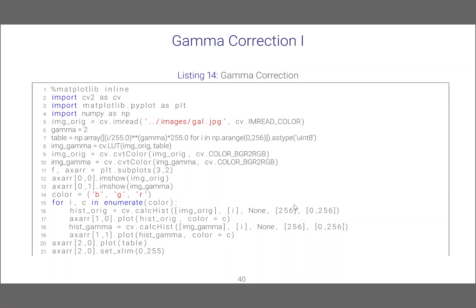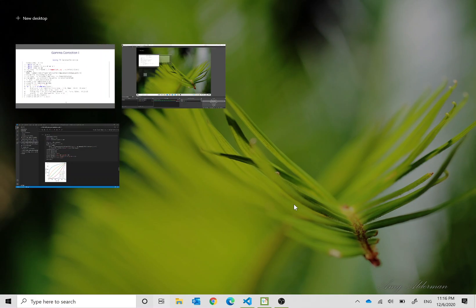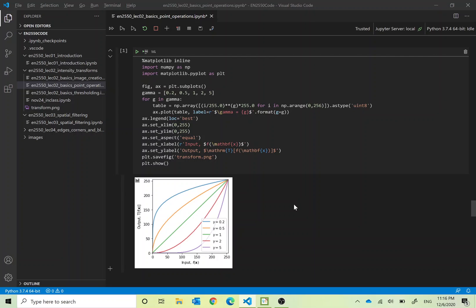So we look at the code in a VS Code window. First of all we will see how to plot these gamma values. In order to plot them...